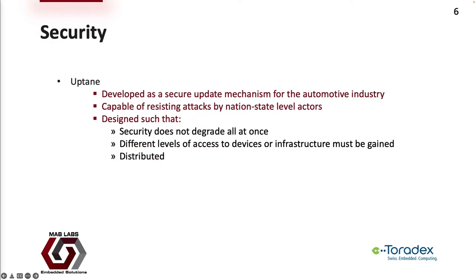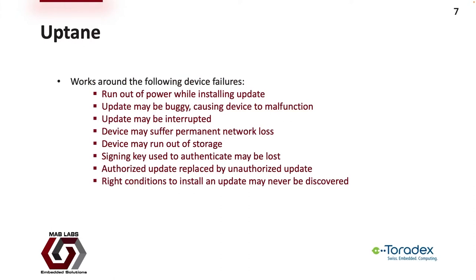One such framework is called Uptain. Uptain was developed as a secure update mechanism for the automotive industry. It is capable of resisting attacks by nation-state level actors, which in the cybersecurity domain are generally the toughest adversaries. Uptain was designed so that security does not degrade all at once — different levels of access to devices or infrastructure must be gained. Uptain can handle device failures including: power interruption during an update, a buggy update causing device malfunction, and interruption for any other reason.